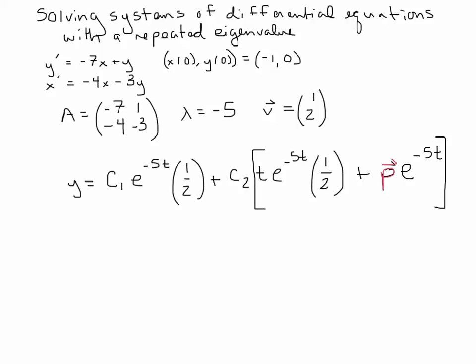So in order to find that, it has to be associated with our system that we already have. And our system that we already had, we took A minus lambda I, and then we multiplied that by our eigenvector. We found the eigenvector. Now we're going to find p. But we're going to find p not by setting this equal to 0, like with the eigenvector. We're going to set it equal to the eigenvector itself to find p.